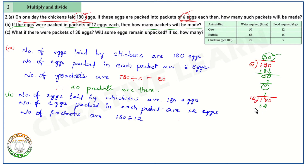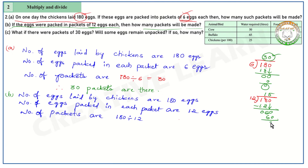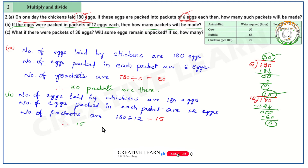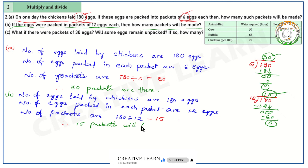12 ones are 12. Do the subtraction: 8 minus 2 is 6, 1 minus 1 is 0. Bring down the next digit — 60. How many times does 12 go into 60? 5 times — 12 fives are 60. 60 minus 60 is 0. So total packets: 15. Therefore, 15 packets will be made.